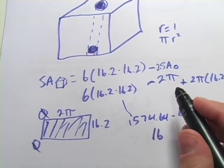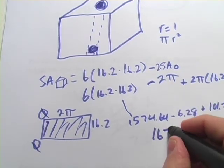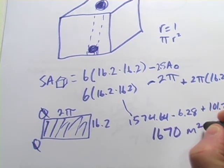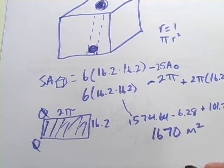and we're supposed to do this to the nearest square meter, so 1,670 meters squared. So that is how to figure out the surface area of some composite shapes.